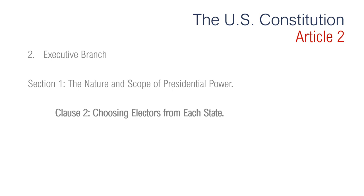Section 1, Clause 2 is about choosing electors from each state. The electors are known more commonly as the Electoral College. The president is elected by electors — representatives chosen by the people rather than by the people directly. Section 1, Clause 3 is regarding the former system of elections. The original method of selecting the president and vice president was replaced by the 12th Amendment. Apparently the framers did not anticipate the rise of political parties and the development of primaries and conventions.